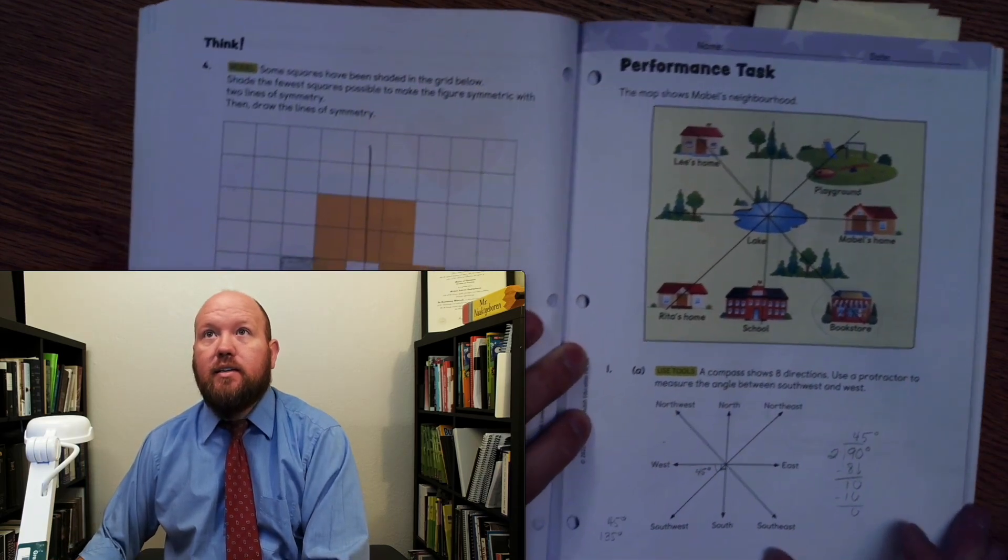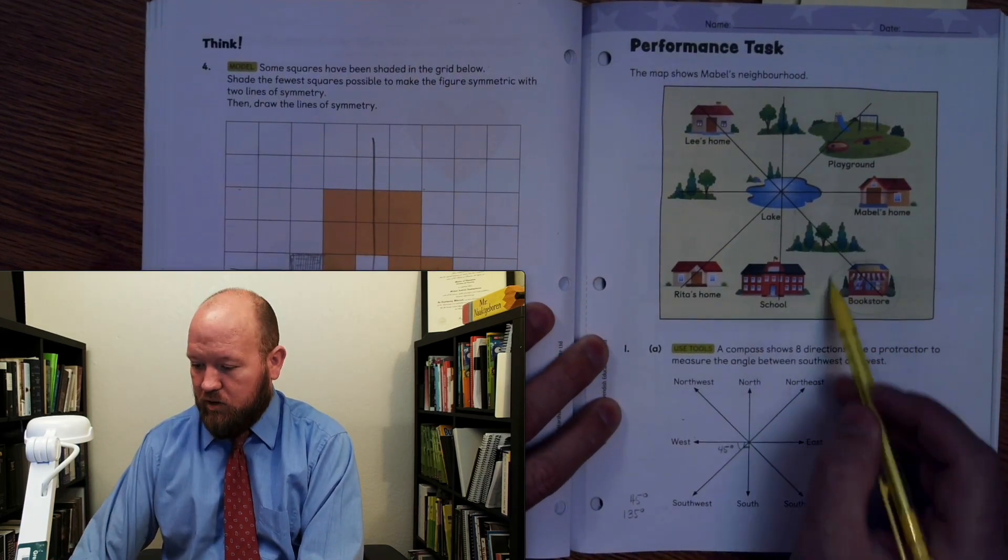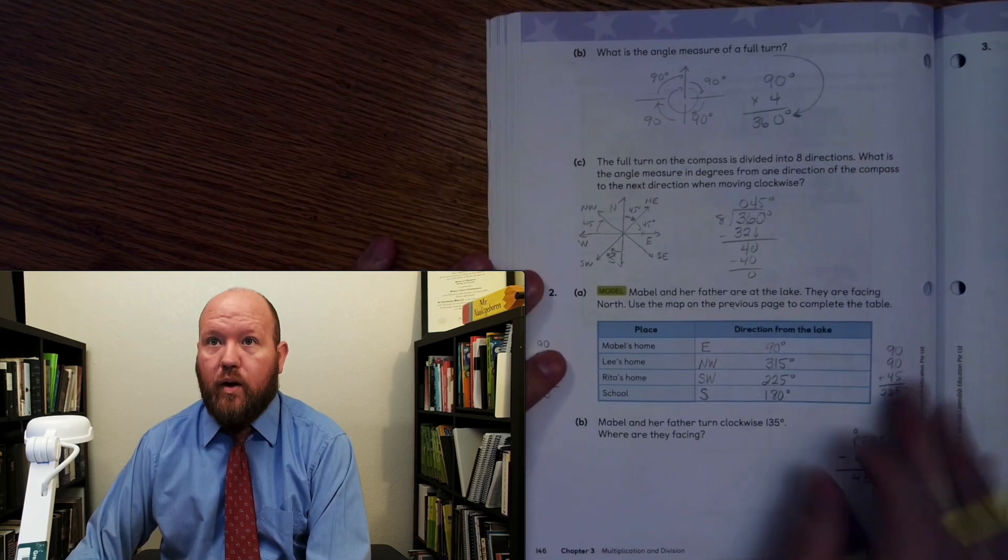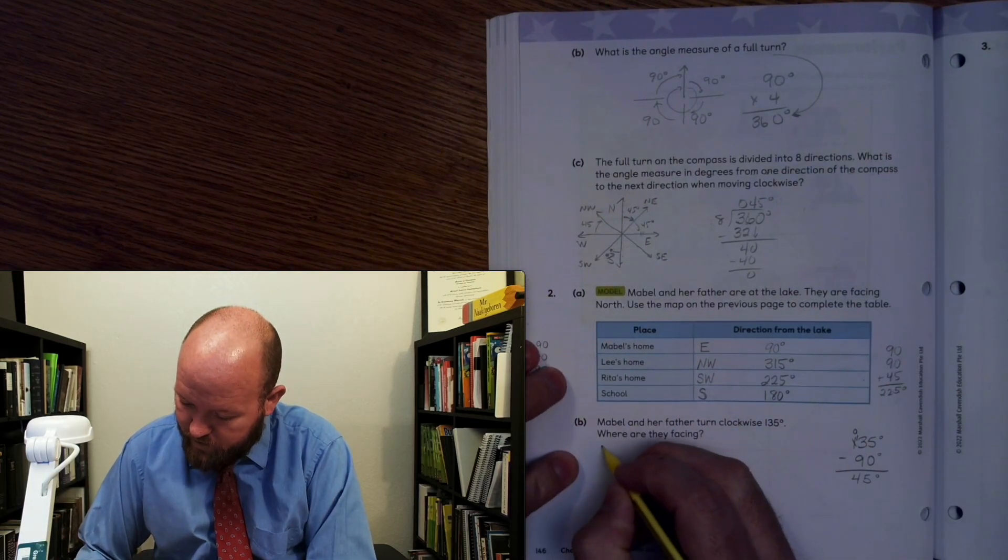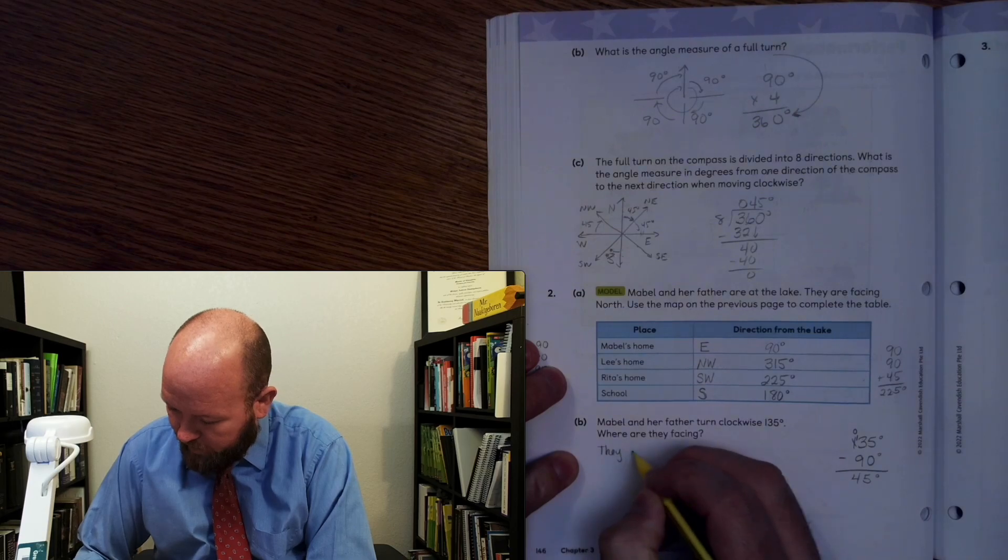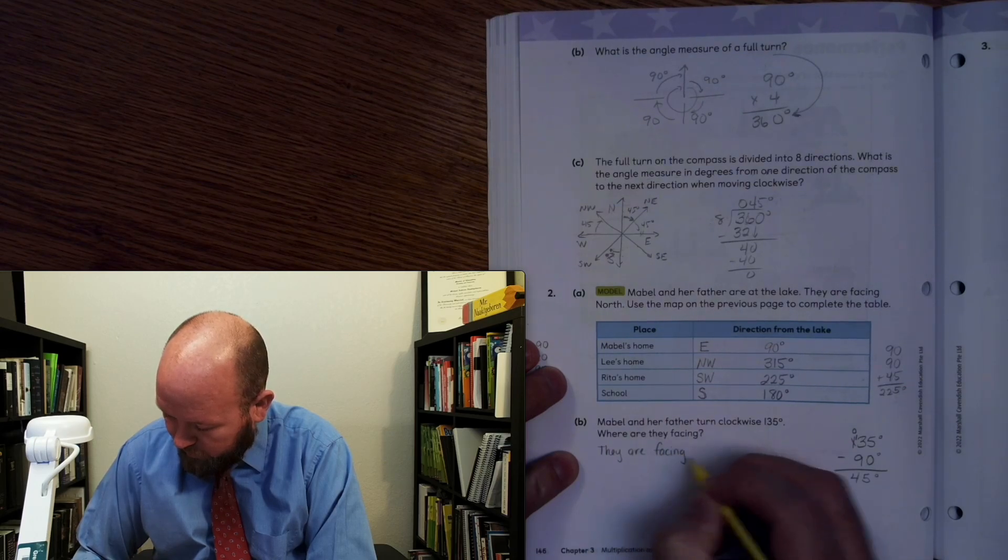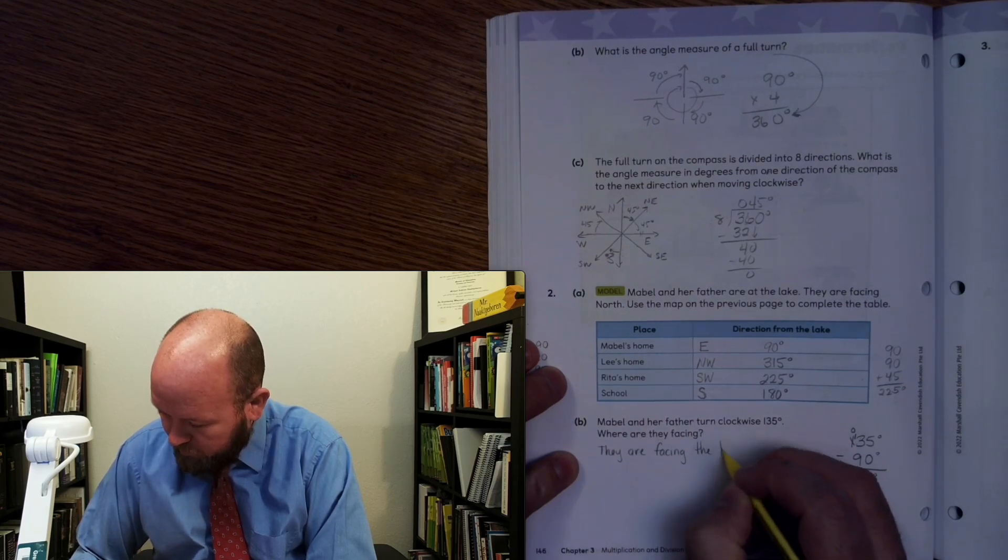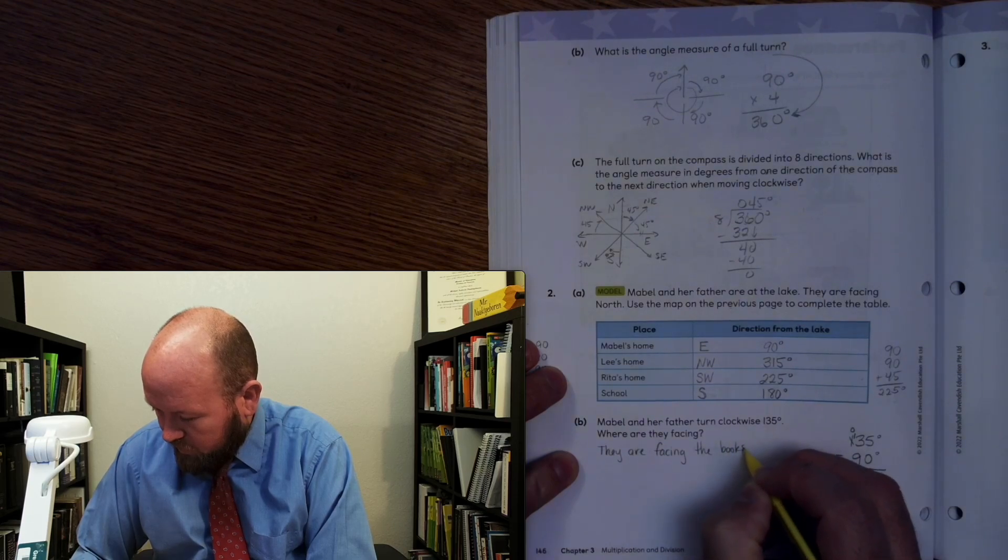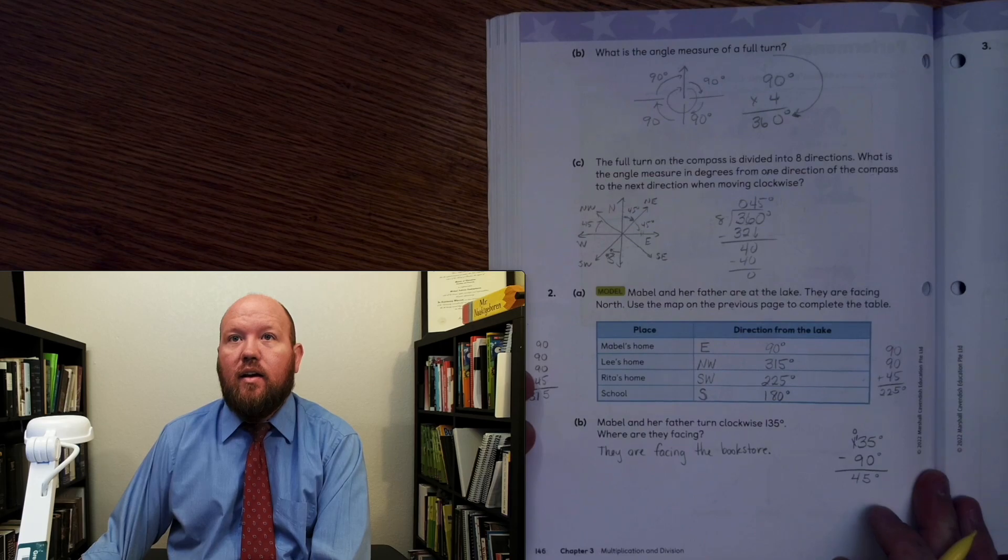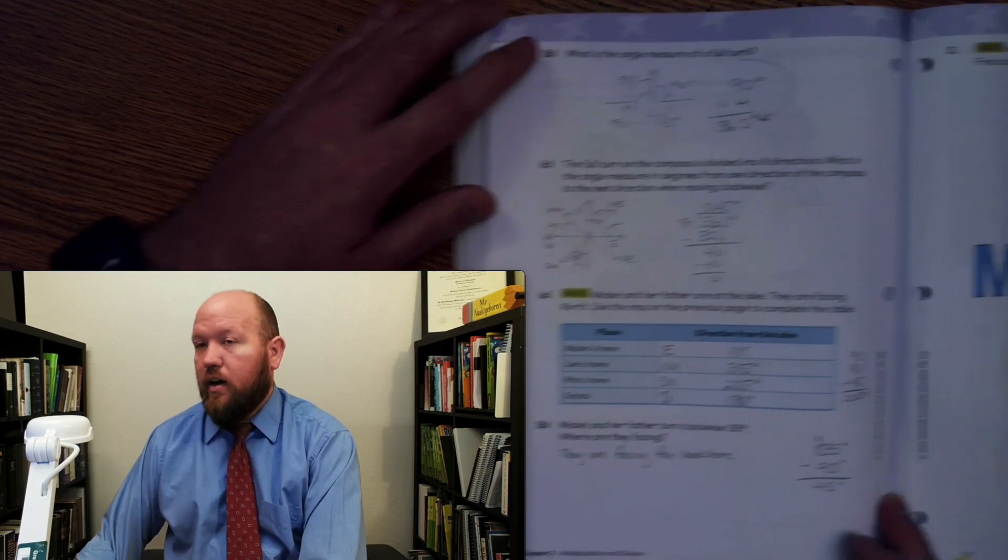So what is facing southeast? Southeast is the bookstore. Okay. So now they're going to be facing the bookstore. So where are they facing? They are facing the bookstore. All right. Now let's look at page 147.